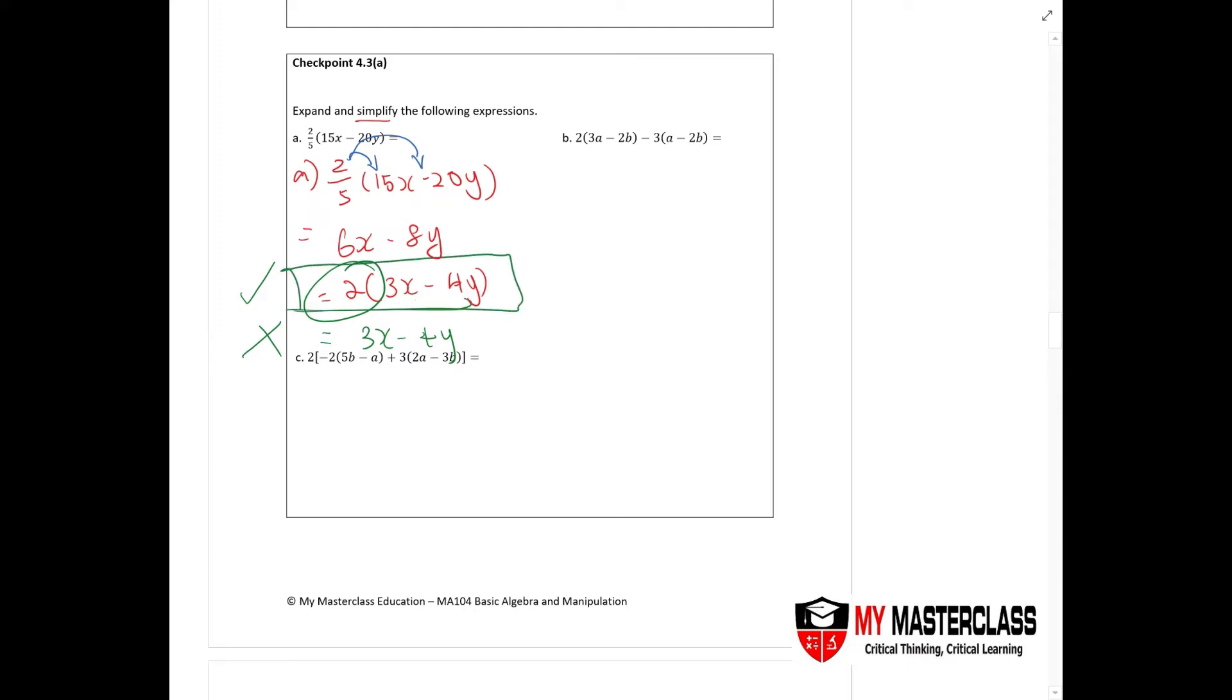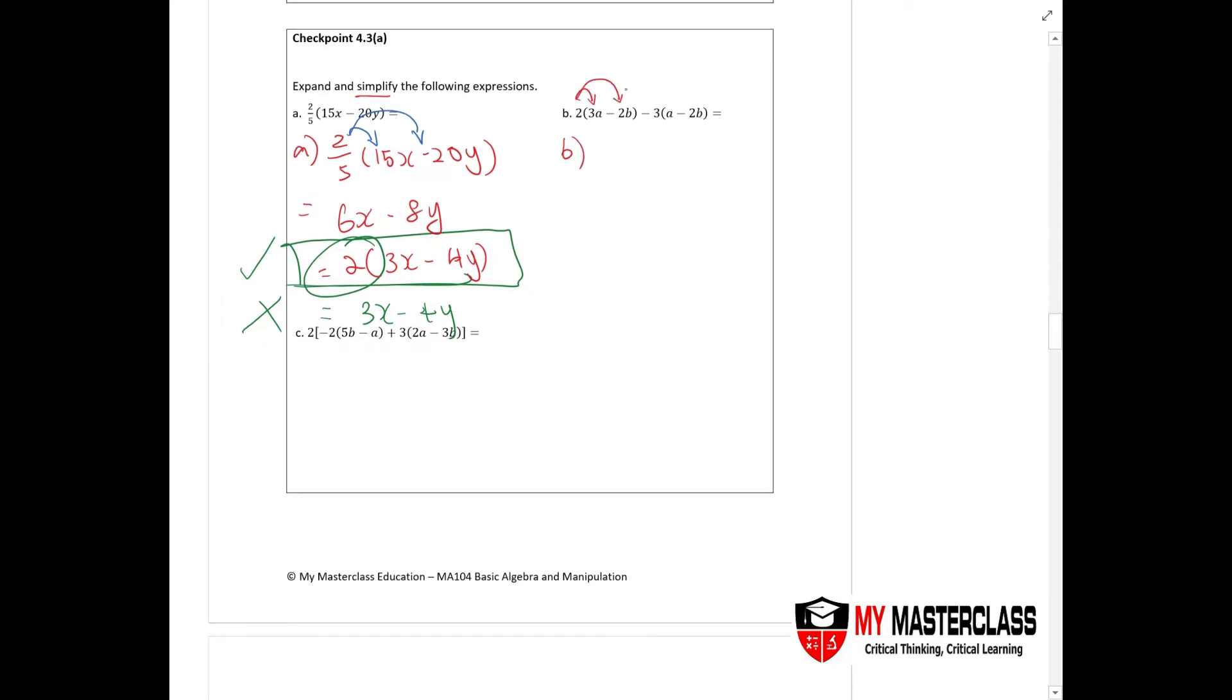Now let's take a look at part b. Same method, all right, just multiply it inside. Now what is the unique part about this question is that whenever you have a negative sign in front of this bracket, can you see the bracket here? What do you need to take note? You need to change the sign inside the bracket.